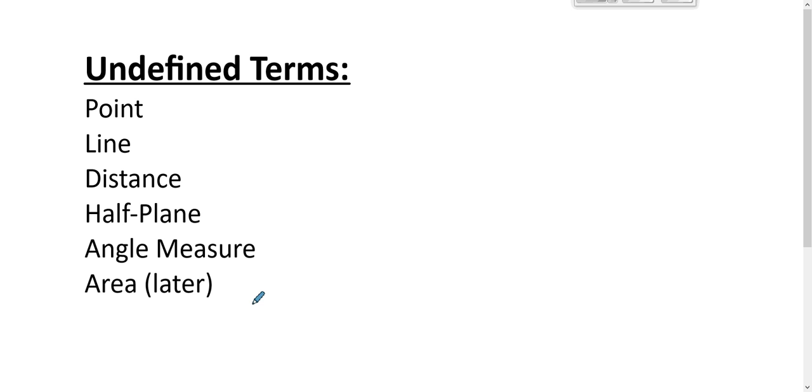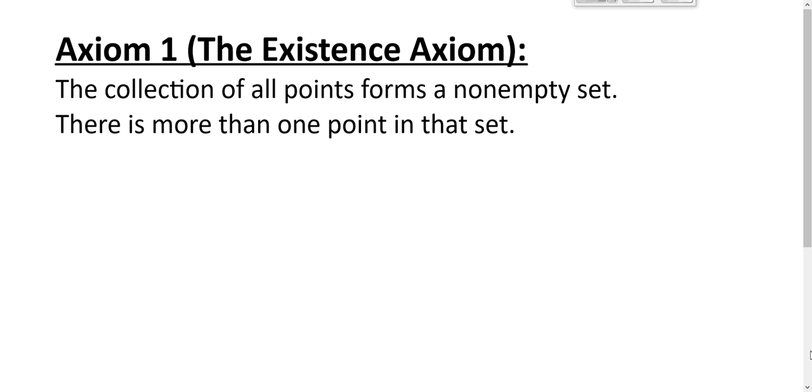And so without further ado, we begin building the geometry. The first axiom that your author refers to is called the existence axiom. It's axiom one. It says the collection of all points forms a non-empty set. There is more than one point in that set.